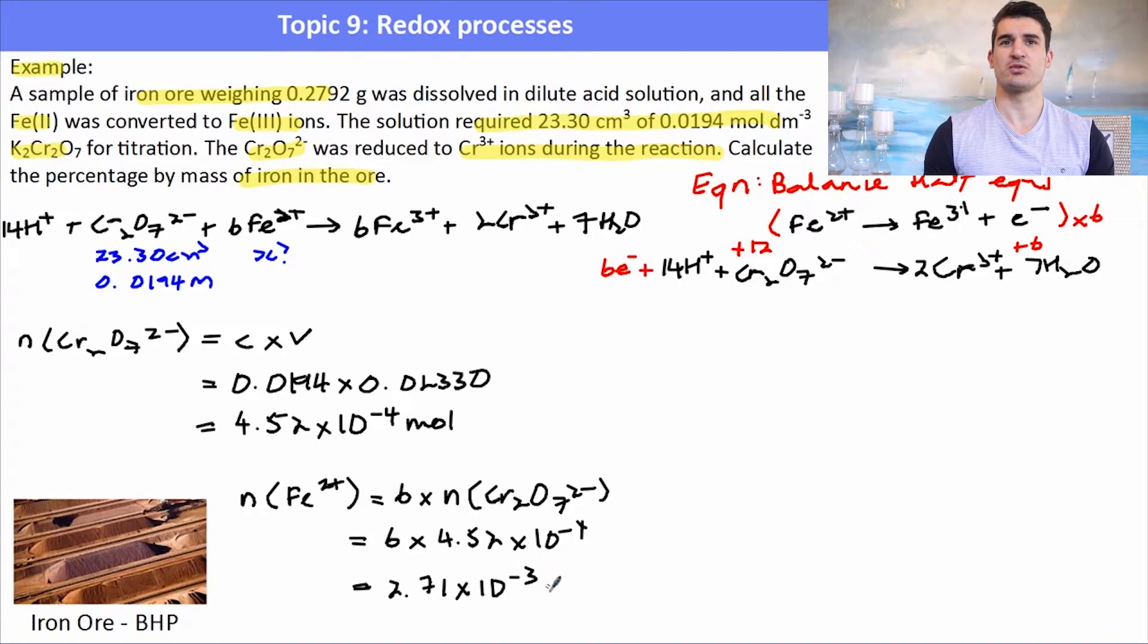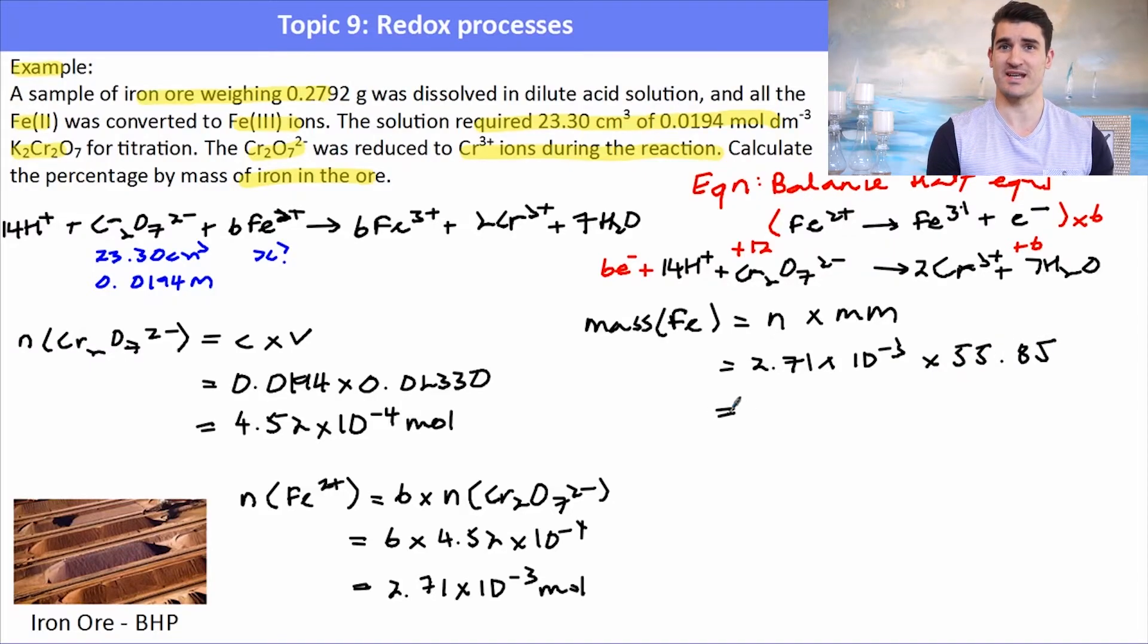Now what I need to do is to work out the mass of iron. Now all of the Fe²⁺ was produced from Fe, so I need to multiply my number of moles by the molar mass of iron. Referring to the data book the molar mass of iron is 55.85. So I can work out the mass of iron that was present in my sample.